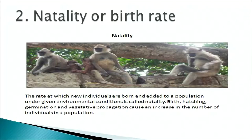Coming to natality or birth rate. The rate at which new individuals are born and added to a population under given environmental conditions is called natality. Birth, hatching, germination, and vegetative propagation all cause an increase in the number of individuals in a population.